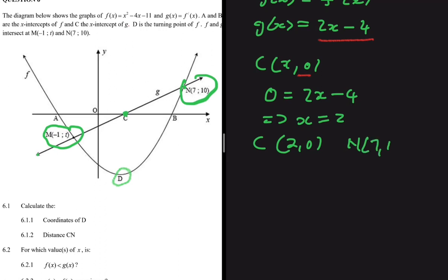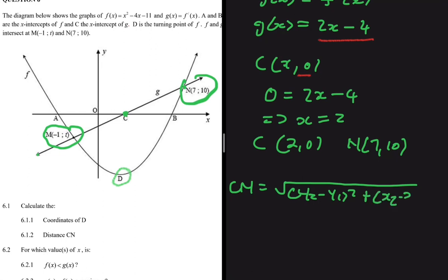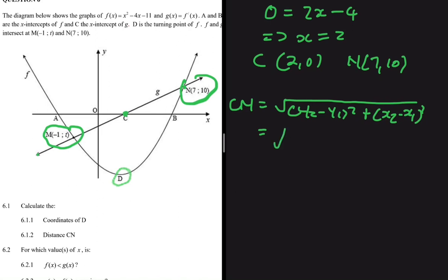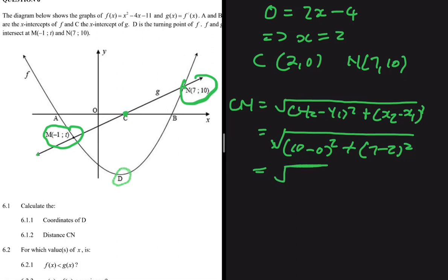We know the coordinates of C are (2, 0) and N is (7, 10). Now we use the distance formula: CN = √[(y₂ - y₁)² + (x₂ - x₁)²] = √[(10 - 0)² + (7 - 2)²] = √[100 + 25] = √125 = 5√5. So the distance CN is 5√5.